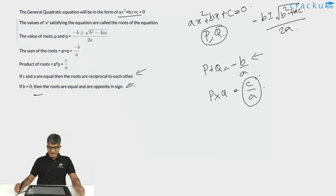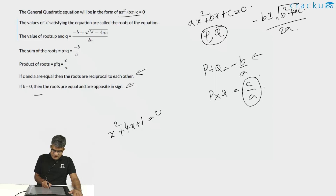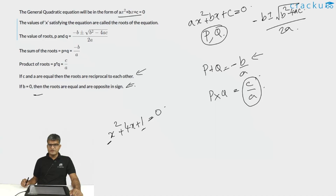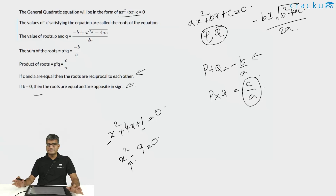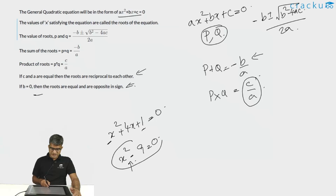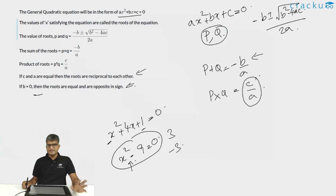For example, looking at x² + 4x + 1 = 0: the constant term c equals the coefficient of x², which is 1. So both roots will be reciprocals of each other because the product of the two roots equals 1. Similarly, if x² - 9 = 0, there is no x term, so the sum of the two roots equals 0. The two roots are 3 and -3, and as expected, their sum is 0.